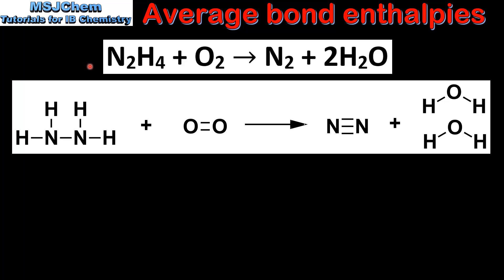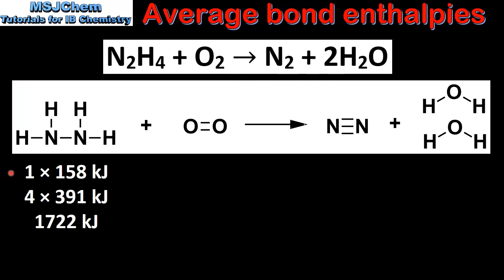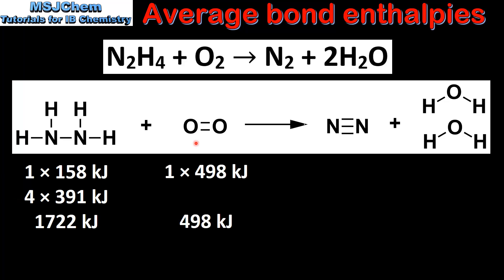In our next example we look at the reaction of hydrazine N2H4 with oxygen to produce nitrogen and water. As in the previous example, we count the number and type of each bond in the reactants and products. Starting with hydrazine, we have 1 nitrogen-to-nitrogen and 4 nitrogen-to-hydrogen single bonds. In the reactants we also have 1 oxygen-to-oxygen double bond.